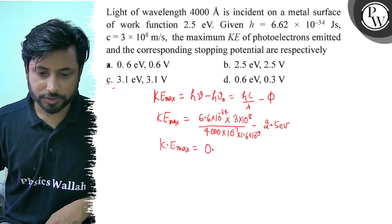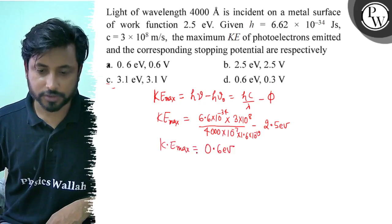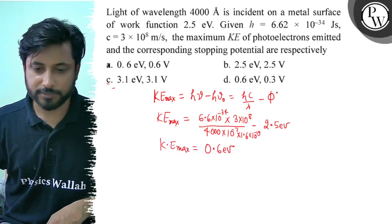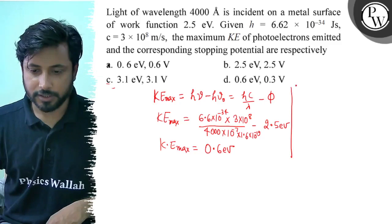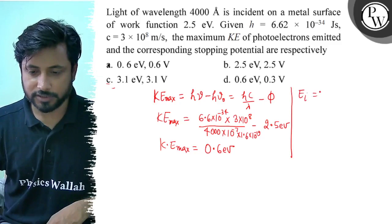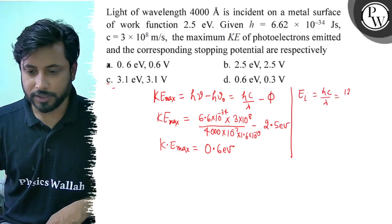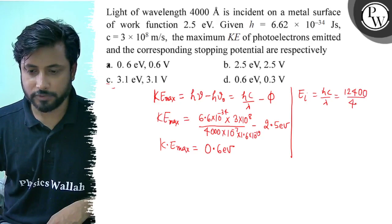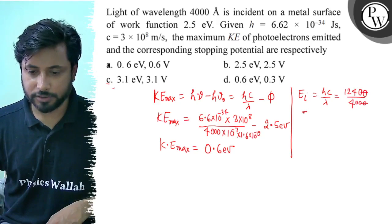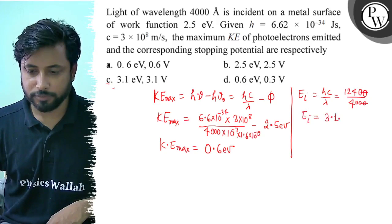It is 0.6 electron volts. We can do this again using incident photon energy. hc by lambda - using hc value in electron volts, 1240 divided by 4000, zeros cancel. Incident photon energy is 3.1 electron volts.